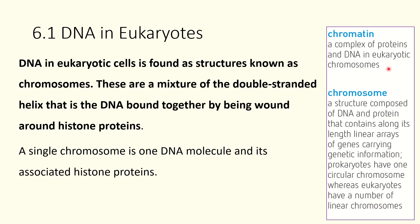A couple of definitions: chromatin is a complex of proteins and DNA in eukaryotic chromosomes — it is the genetic material within your nucleus. A chromosome is a discrete part of that; it's the DNA and the protein it's wrapped around.